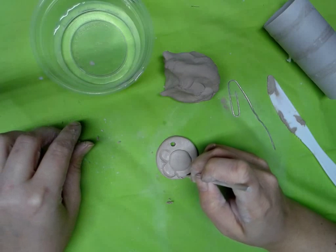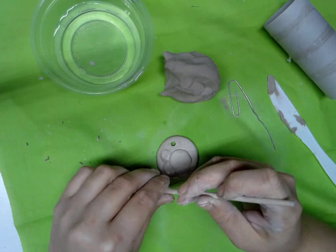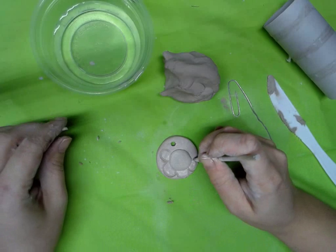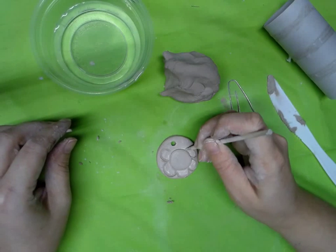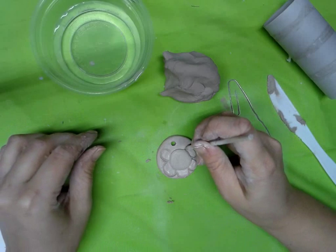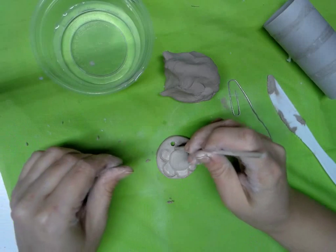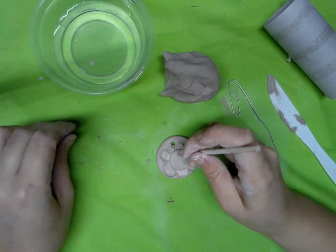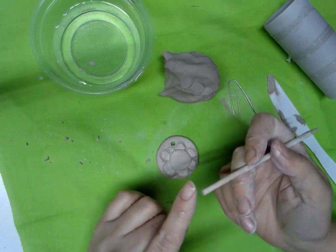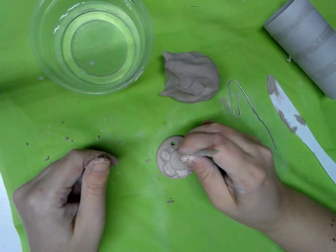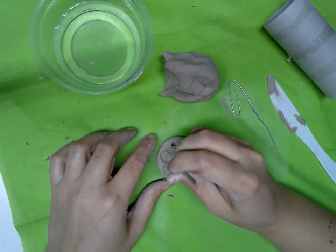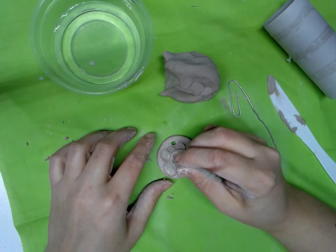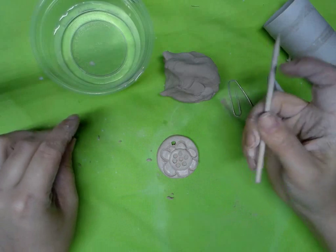Now I have part that's sticking out and part that's going in. You can see how that gives it more dimension, it's more three dimensional now. Oh, that last petal is a little small. Then I'm going to use the other end of the stick and make little dots in there.